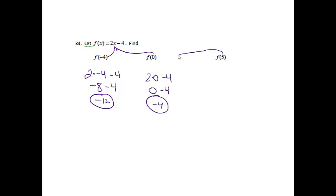And then the last one, we're going to put 5 in for that x. So we'll do 2 times 5 minus 4. 2 times 5 is 10. Minus 4 is 6. And there we have it.